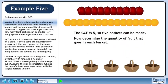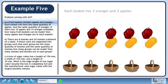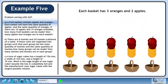Now determine the quantity of fruit that goes in each basket. 10 apples divided into 5 baskets gives 2 apples per basket. 15 oranges divided into 5 baskets gives 3 oranges per basket. Each basket has 3 oranges and 2 apples.